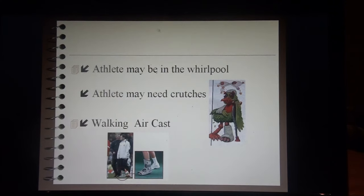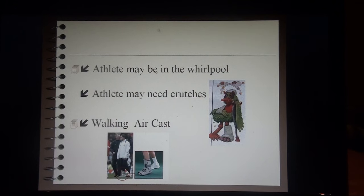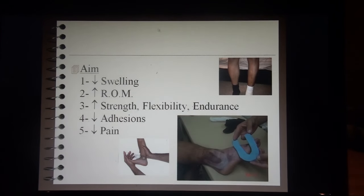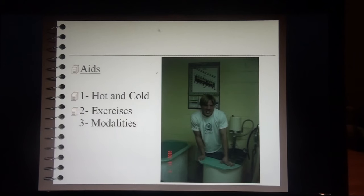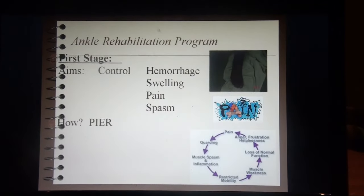The athlete may need a whirlpool to get swelling under control. They may need crutches, ice, or a walking air cast. Our aims are to decrease swelling, increase range of motion, increase strength, flexibility, and endurance, decrease adhesions and ensure fibers are realigning properly, and decrease pain. We'll use hot and cold tubs, ice, heat when appropriate, exercises, and other modalities.